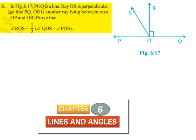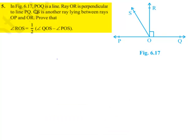Moving on to the fifth problem. In figure 6.17, POQ is a line, ray OR is perpendicular to line PQ, and OS is another ray lying between rays OP and OR. Prove that angle ROS is equal to half times angle QOS minus angle POS.